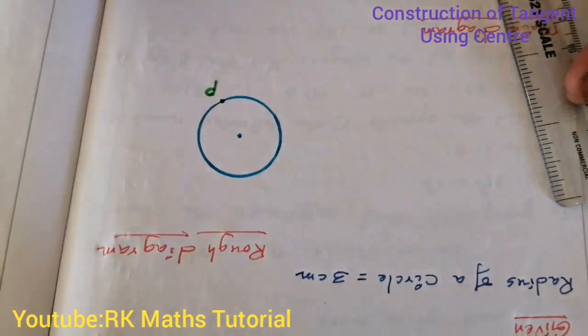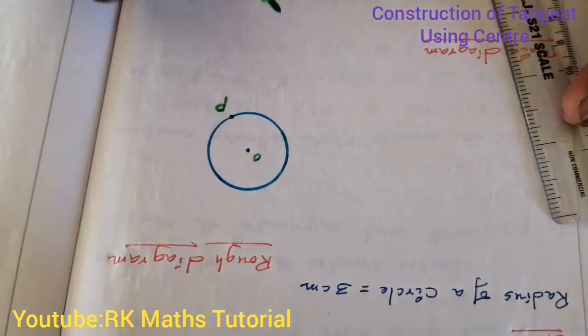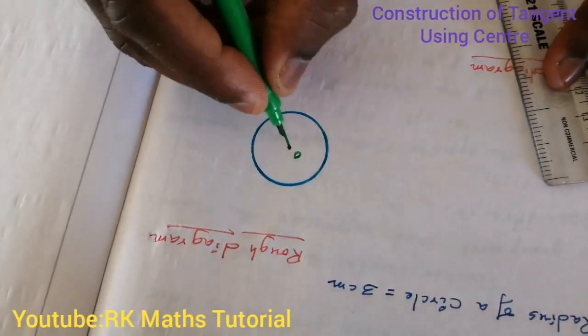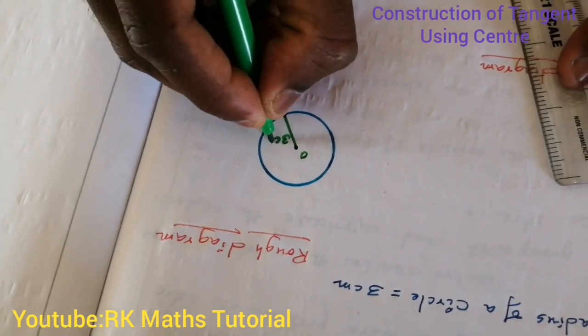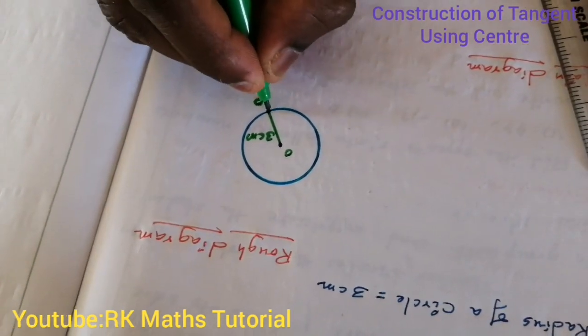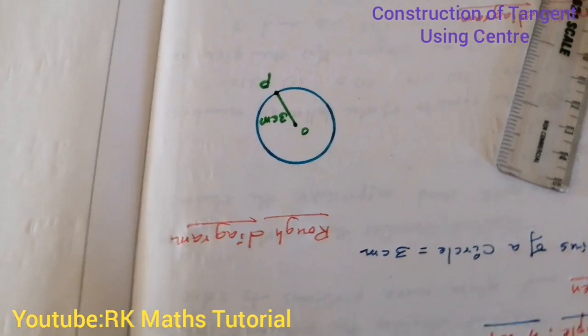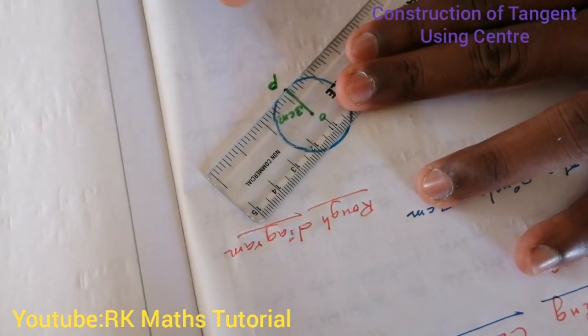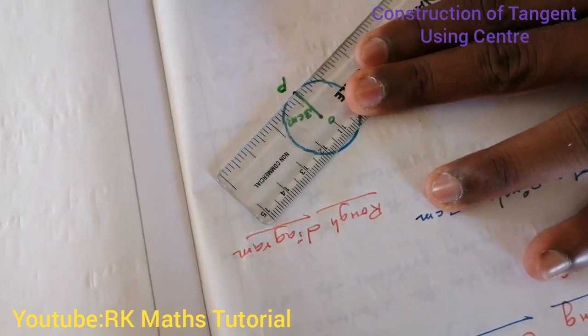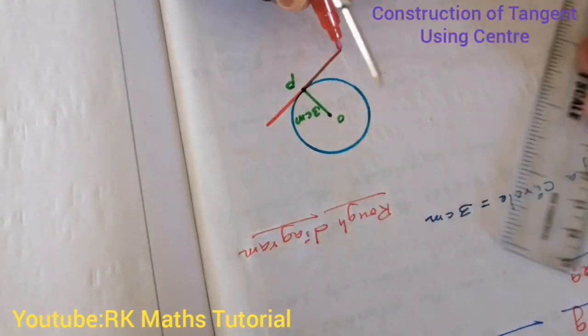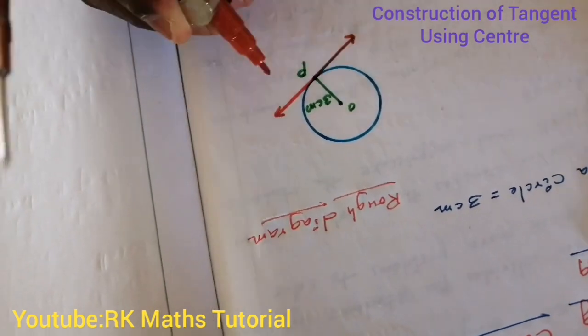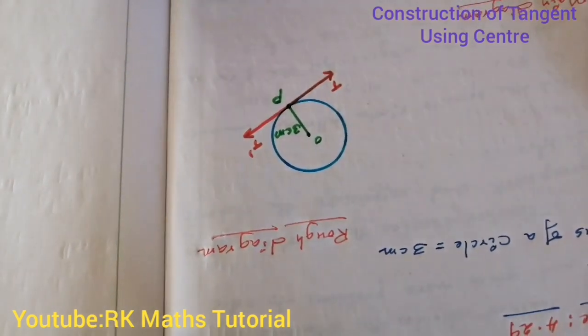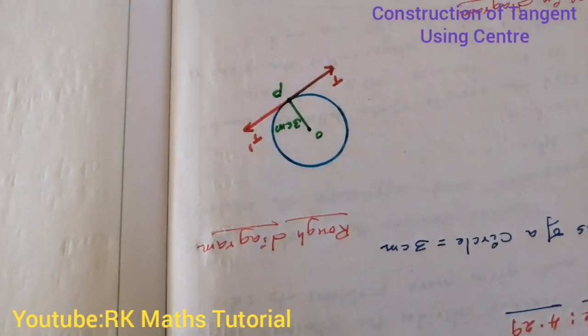Okay, P is a point here. The center is over here. Then join O and P. So OP is 3cm, this radius is the same. Then at P, we draw the tangent. So tangent is over here. This is the tangent. We label it T and T', tangent. Okay, so this is the rough diagram.